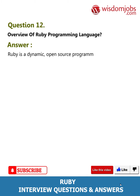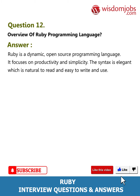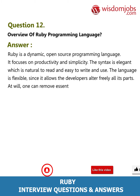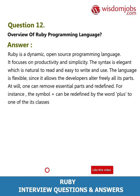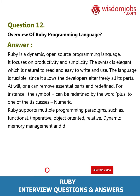Question 12: Overview of Ruby programming language. Answer: Ruby is a dynamic, open-source programming language. It focuses on productivity and simplicity. The syntax is elegant, natural to read, and easy to write. The language is flexible since it allows developers to alter freely all its parts. One can remove essential parts and redefine them — for instance, the symbol plus can be redefined by the word plus in the Numeric class. Ruby supports multiple programming paradigms such as functional, imperative, object-oriented, and dynamic. Memory management and dynamic type systems are additional features of Ruby.